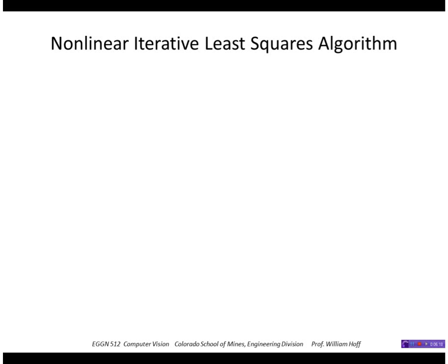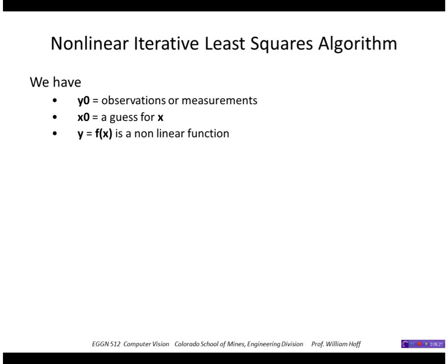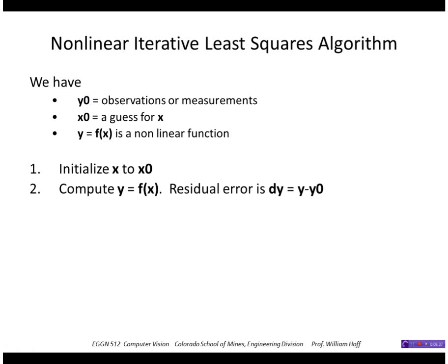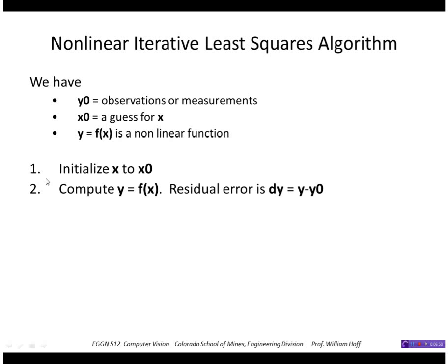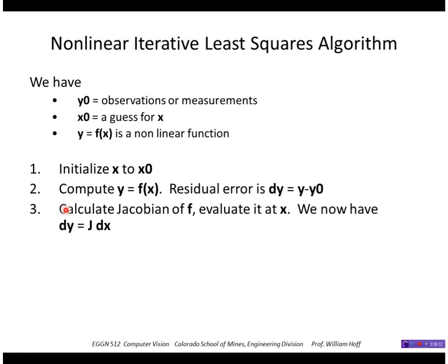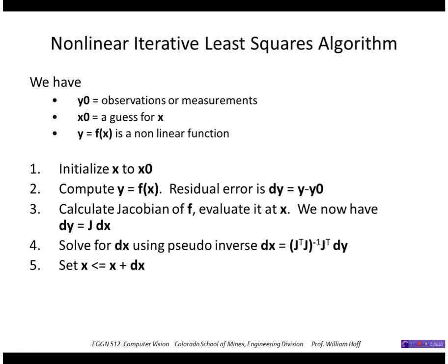The algorithm we're going to use is similar to Newton's method. We start with a guess x0, we have our known function, and we have our measurements y. We initialize x to x0, compute the value of y at our guess, get the residual error, compute the Jacobian evaluated at that point. Now I have this linear equation for dy related to dx — solve for dx and add dx to the current estimate for x to get our new estimate. Then we repeat that until it converges.